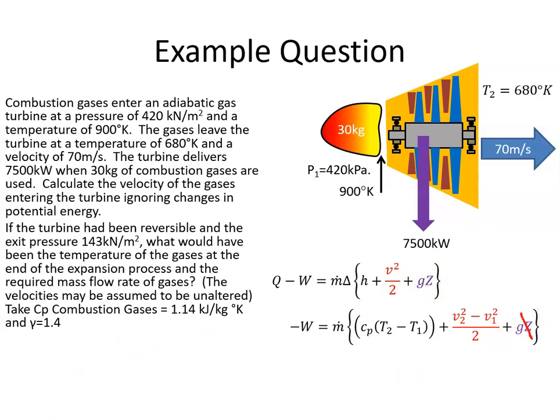We're told to neglect potential energy changes, so this value here will be gone. The change in kinetic energy is V2² minus V1², and the change in enthalpy is Cp times T2 minus T1.